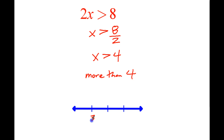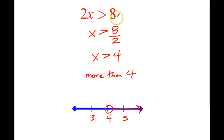Let's try it. We'll do 3, 4, 5 on the number line. I'm going to do an open circle and shade it to the right. We'll pick 5: 2 times 5 is 10. Is 10 greater than 8? Yes, it is. Let's try 3: 3 times 2 is 6. Is 6 greater than 8? No, it's not. This looks like it works.